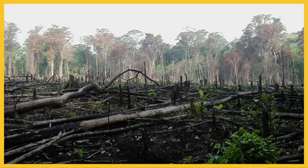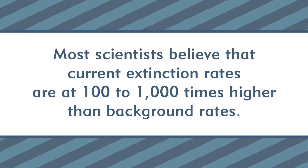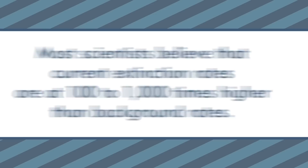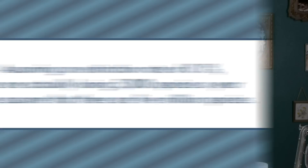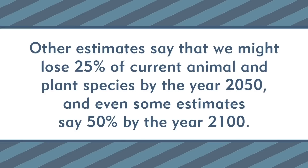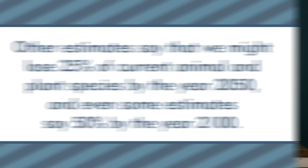These are all mass extinction events of the past, but what about extinction happening today? The leading cause of extinction right now, based on available data, is habitat loss or destruction — species don't have enough evolutionary time to adapt to how fast these changes are taking place. Most scientists believe current extinction rates are 100 to 1,000 times higher than background rates. Assuming an extinction rate of 0.1%, we're losing around 5,000 species a year if there are 5 million species. Other estimates say we might lose 25% of current animal and plant species by 2050, and even 50% by 2100. Extinction rates right now are increasing, and the growth of the human population will increase this loss.